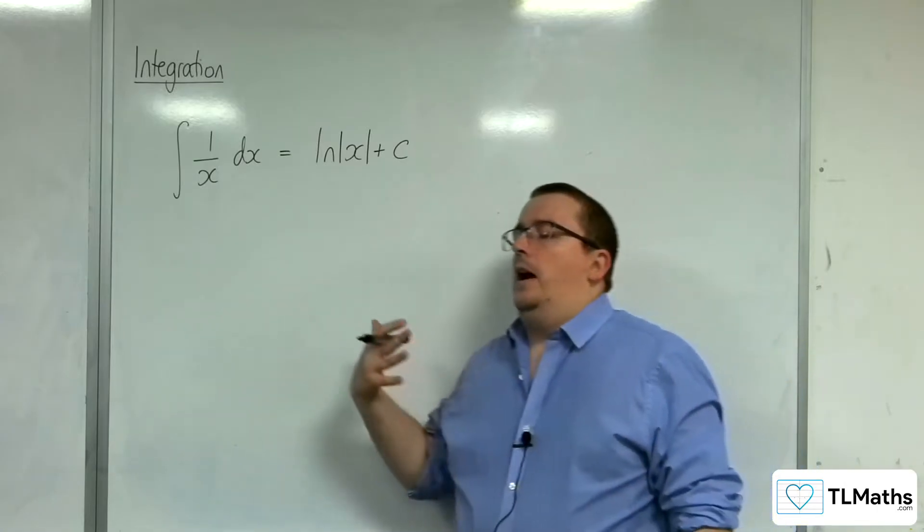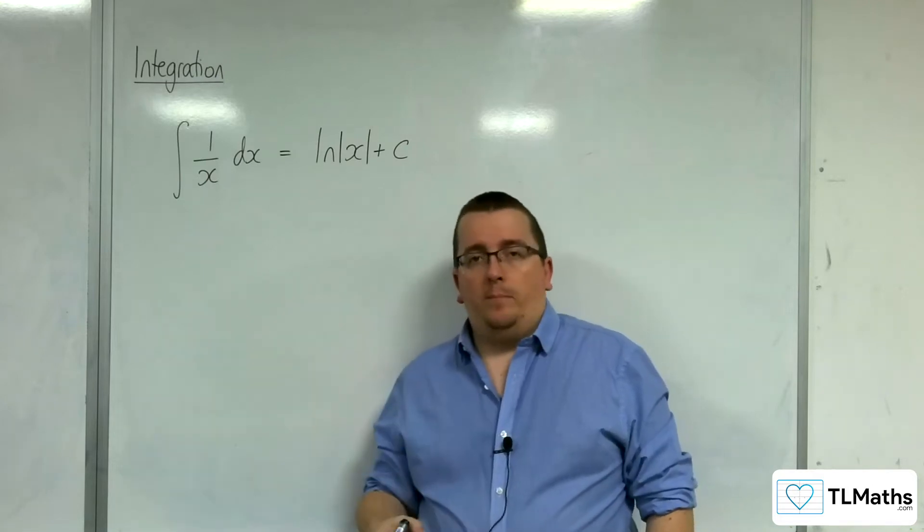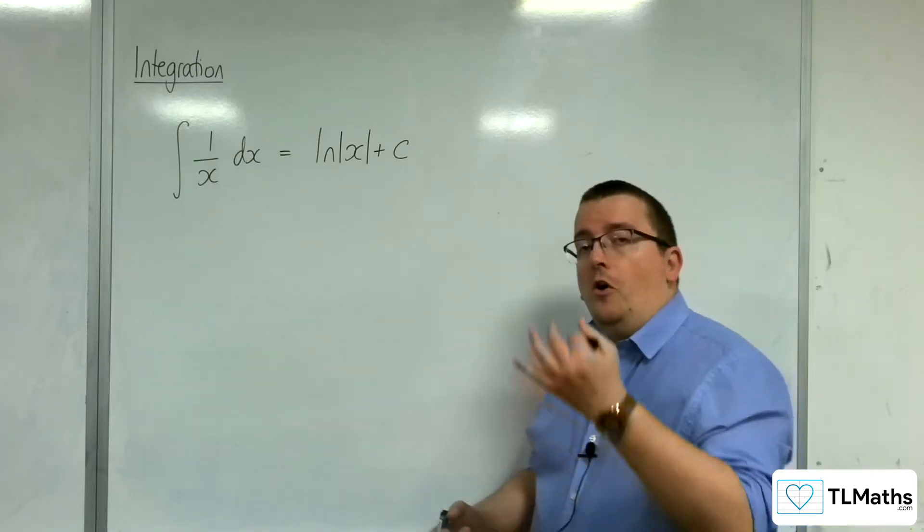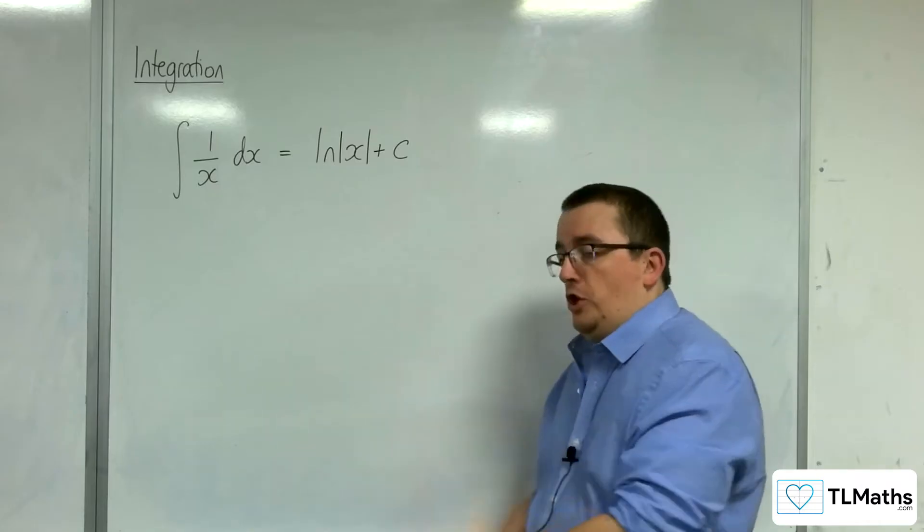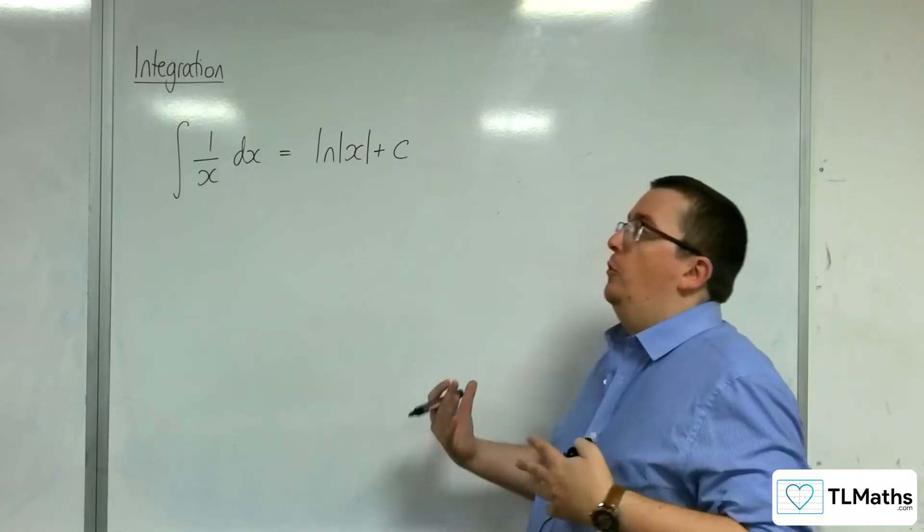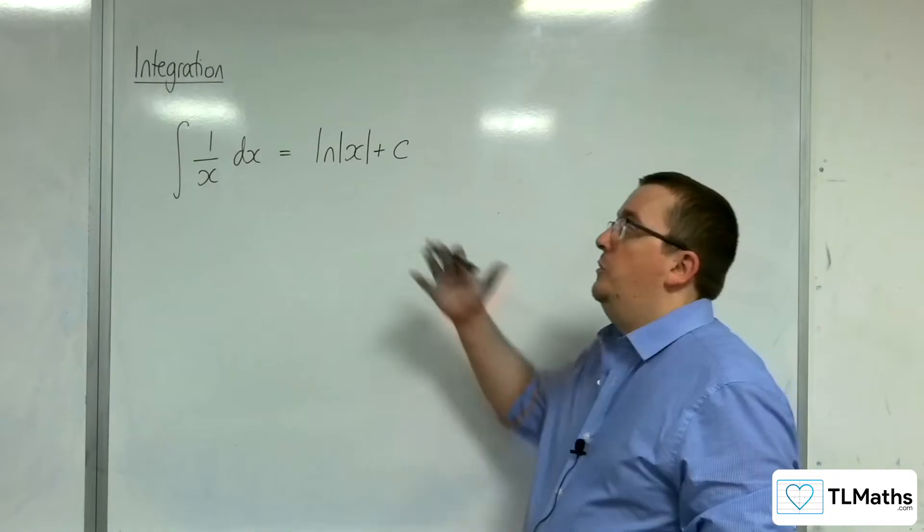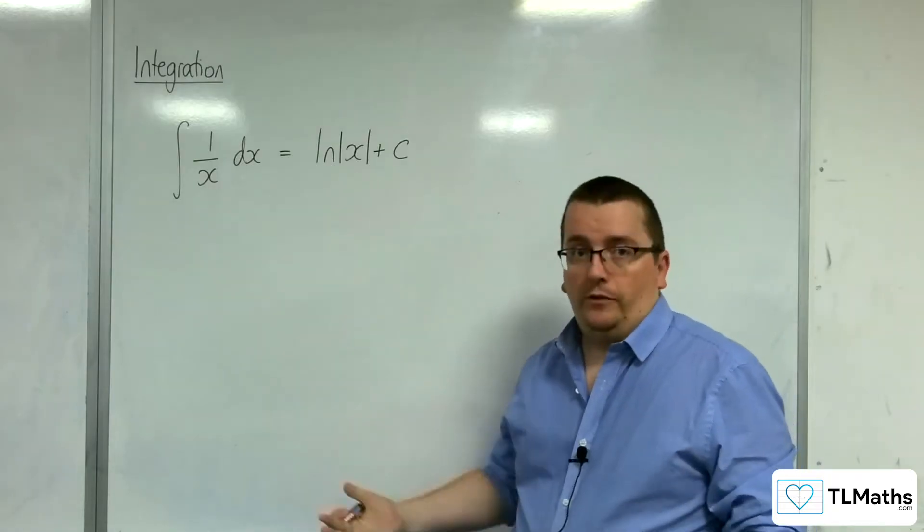We've seen when we did differentiation and looked at implicit differentiation, we showed why y equals ln of x differentiates to 1 over x. So why doesn't 1 over x integrate to just the natural log of x plus a constant?